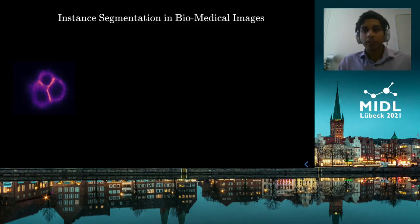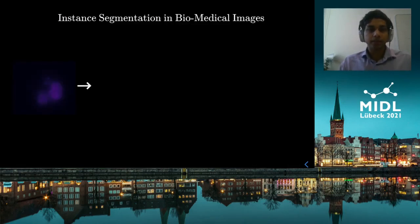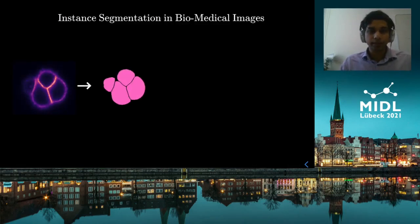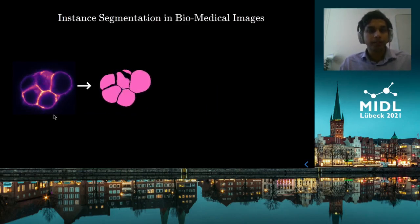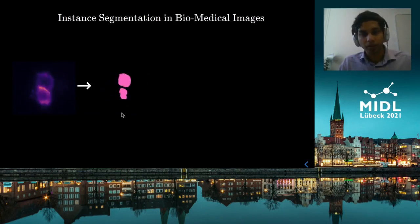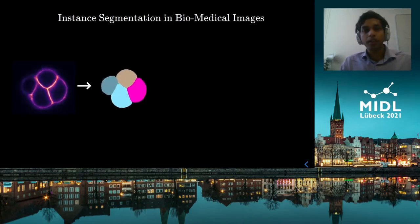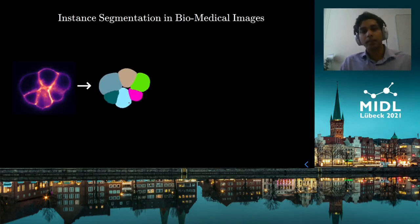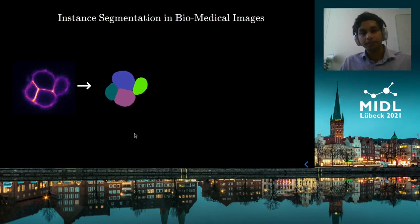The task of instance segmentation is to identify a region that corresponds to a certain class. Here, for example, we are interested in the region that is expressing the membrane marker, and then to partition this region such that all individual objects are assigned a unique label or ID.